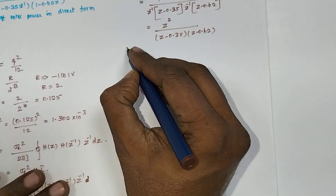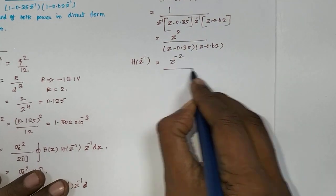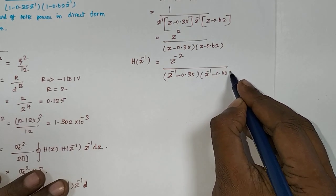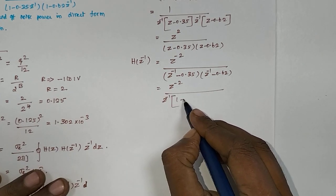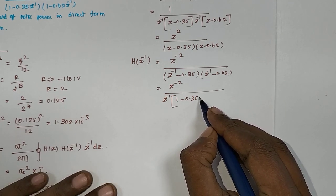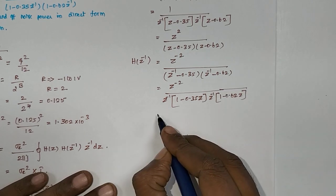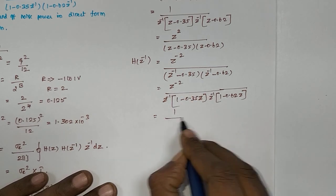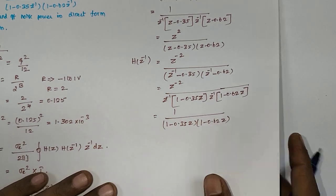To find H(z⁻¹), apply the inverse substitution: it is z⁻² divided by (z⁻¹ minus 0.35)(z⁻¹ minus 0.62). Taking z⁻¹ common outside gives z⁻² divided by z⁻¹(1 minus 0.35z) times z⁻¹(1 minus 0.62z). The z⁻² terms cancel, leaving 1 divided by (1 minus 0.35z)(1 minus 0.62z).